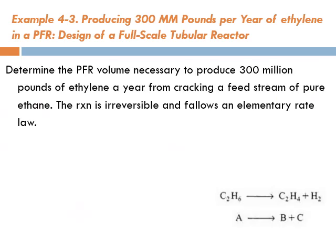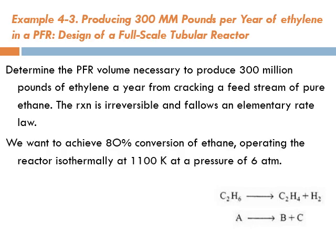What's required here: determine the plug flow reactor volume necessary to produce 300 million pounds of ethylene per year from cracking a feed stream of pure ethane. The reaction is irreversible and follows an elementary rate law. We want to achieve 80 percent conversion of ethane, operating the reactor isothermally at 1100 Kelvin and a pressure of 6 atmospheres.